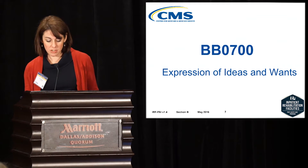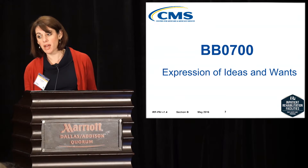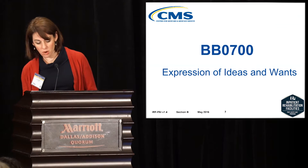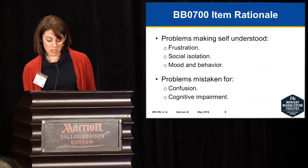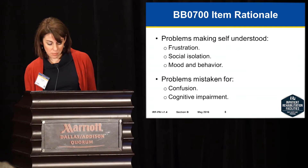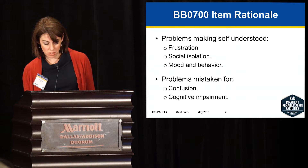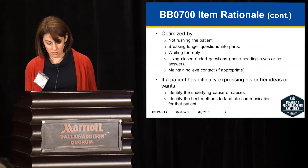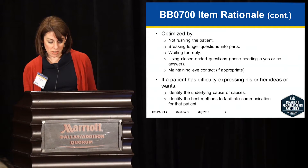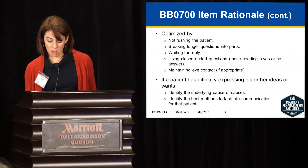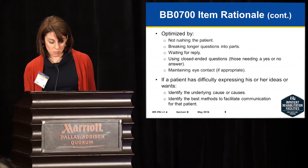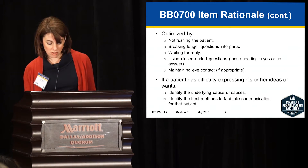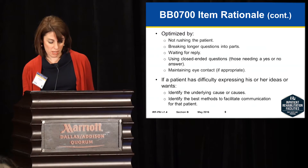We're going to look first at Section B, BB0700, expression of ideas and wants. It might be helpful to take out your IRF-PAI and look at that as we go along. The inability for a patient to express their ideas and wants can cause frustration, social isolation, and decreased mood. The lack of ability to express oneself can be misinterpreted as confusion or a cognitive impairment.